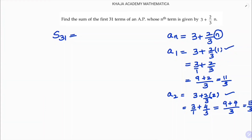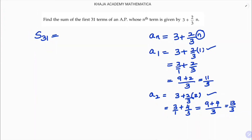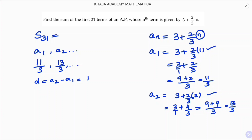Now you have the first term and the second term. First term is 11 by 3 and second term is 13 by 3. You can find the common difference. Common difference will be A2 minus A1, that is 13 by 3 minus 11 by 3, which is nothing but 2 by 3. So common difference is 2 by 3.